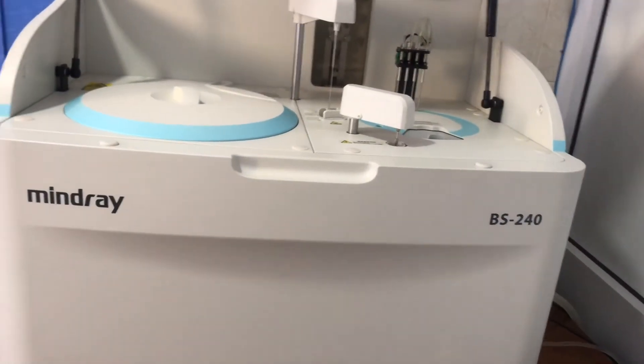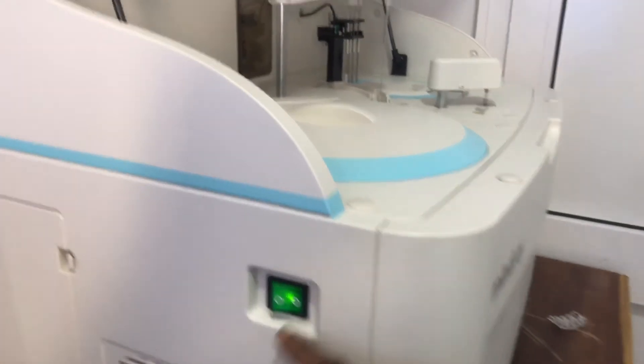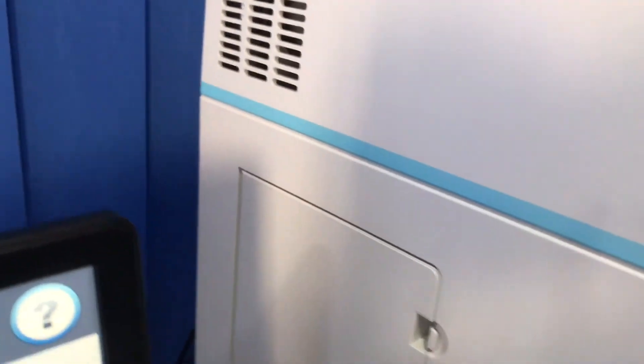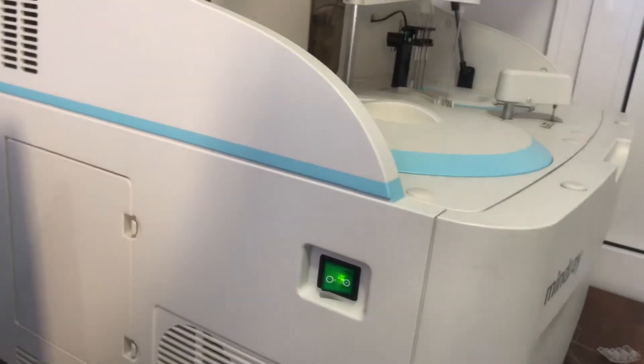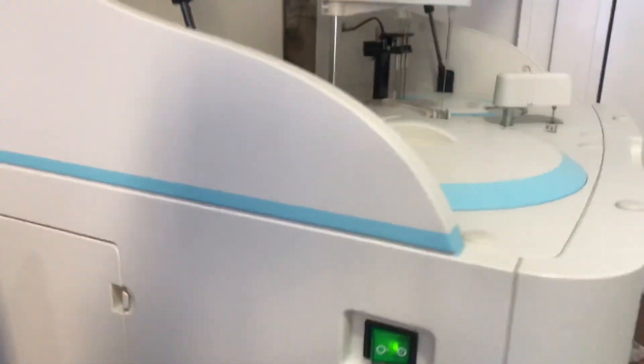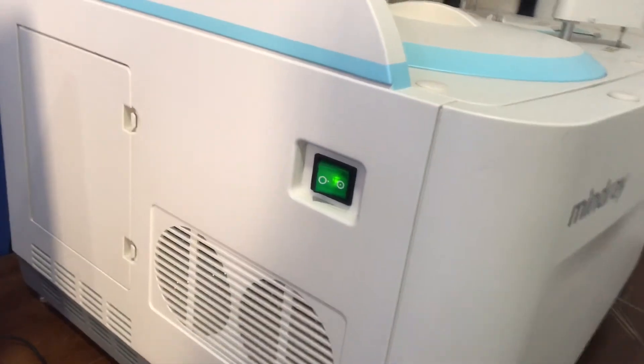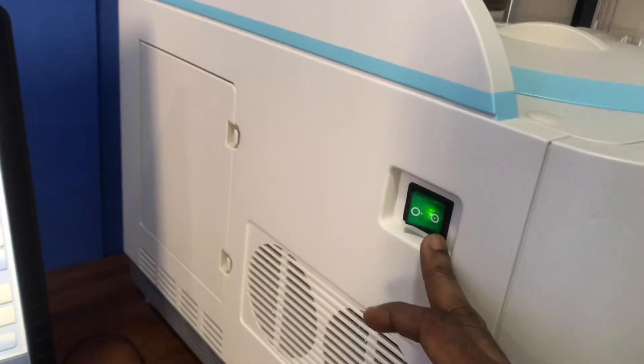If you look at the left side, we have the switch button here, and then the back side has the button for the refrigerator. If you want to put it on, you put on the refrigerator button first and then you come and switch on the analyzer button which is here.